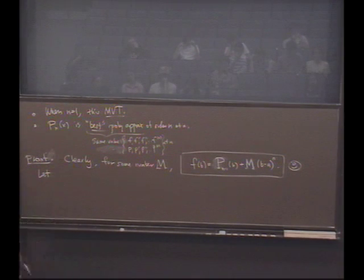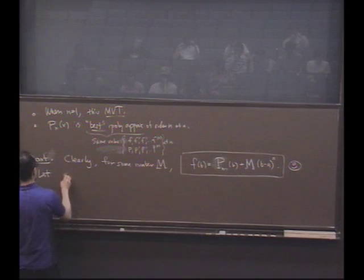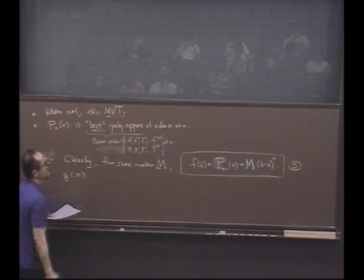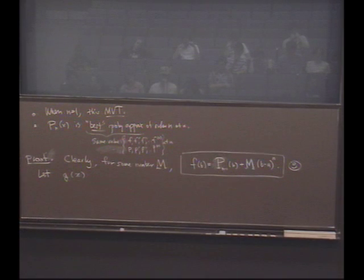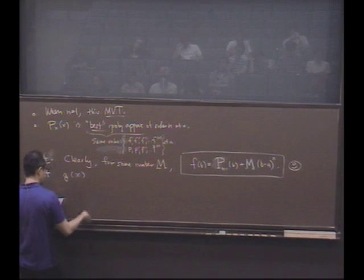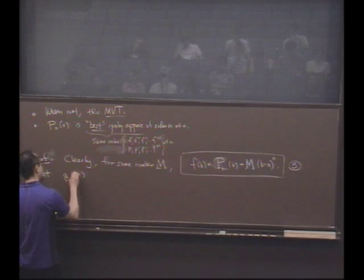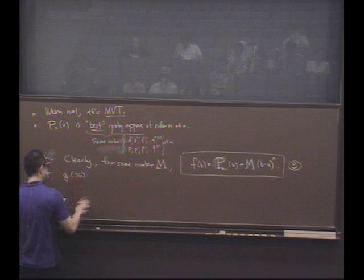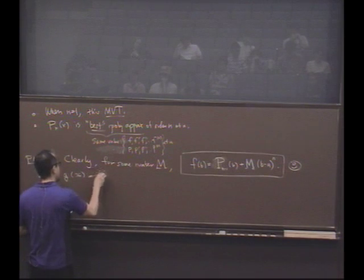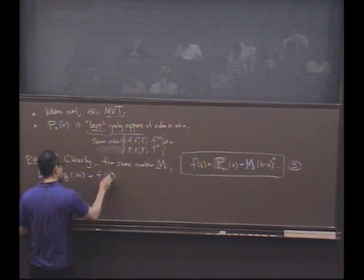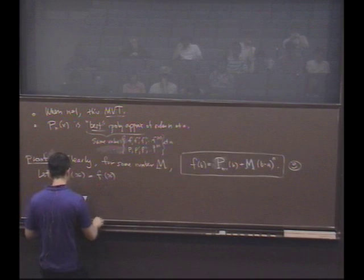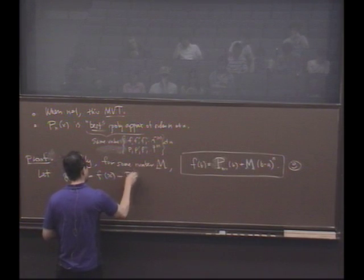Let's look at the following function. Let's look at some function I'll call g of x. Now I'm introducing a variable here. I'm going to define a function g of x, which will be f at x. So that's the original function I'm interested in, minus the polynomial.